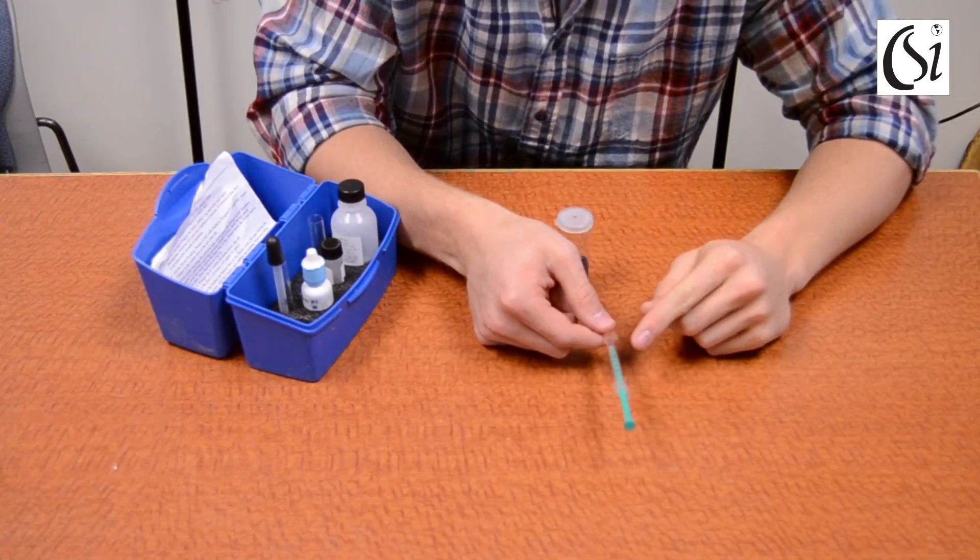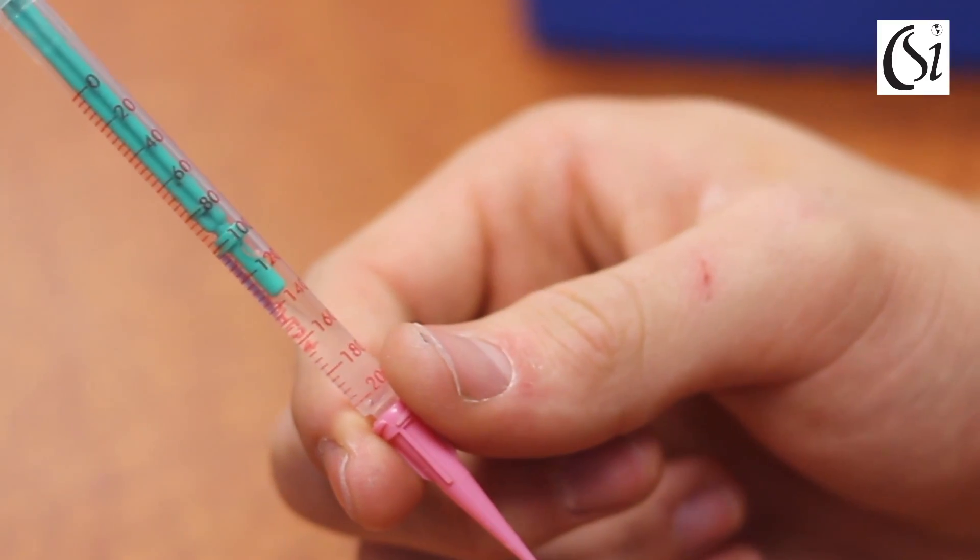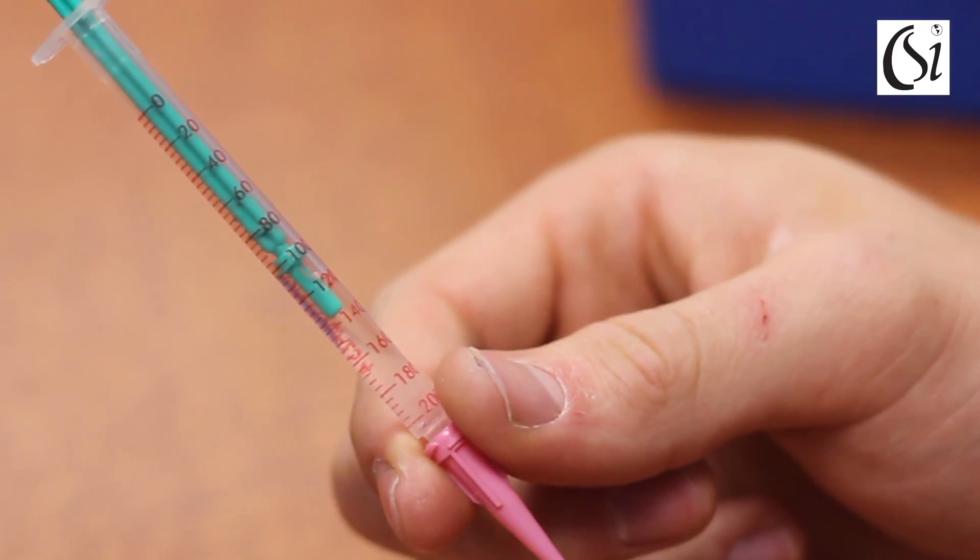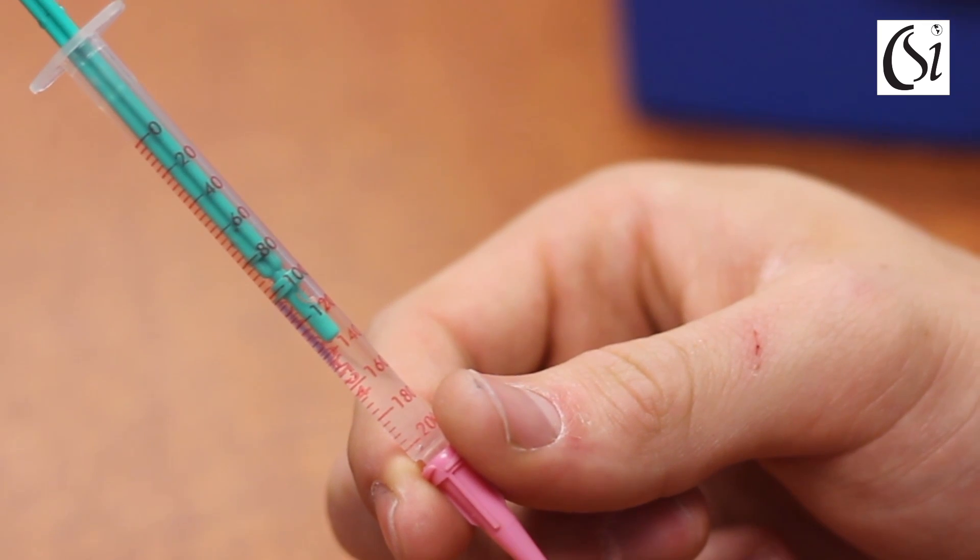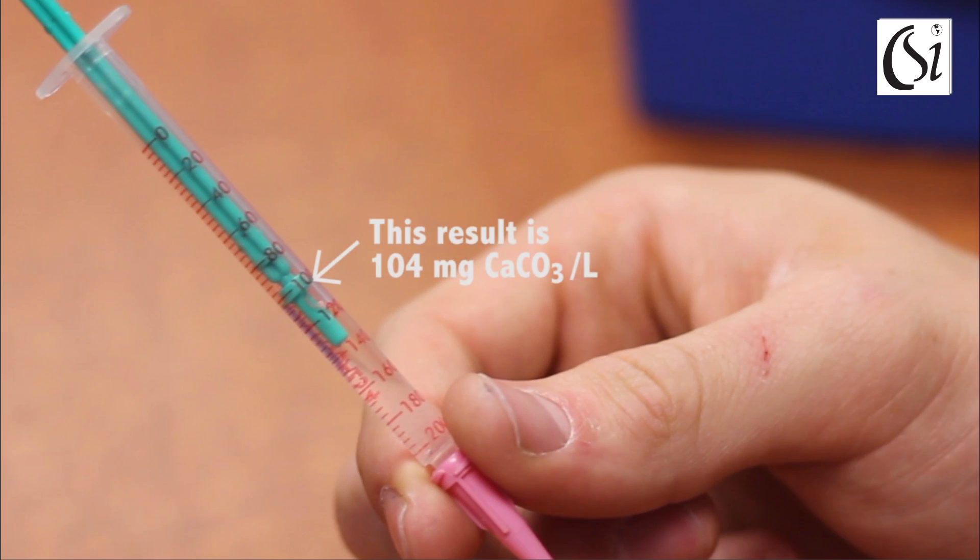Read your result where the green ring touches the outside of the plunger. Record your result on the field datasheet under the Total Hardness section.